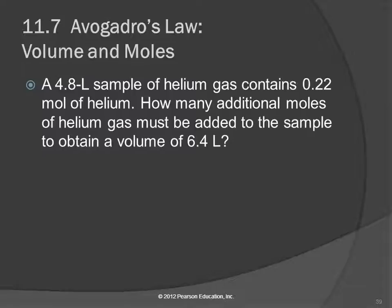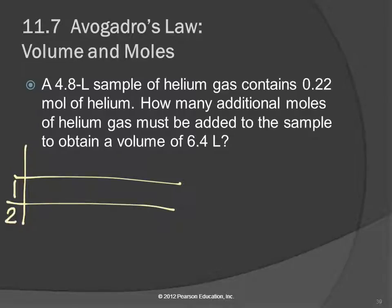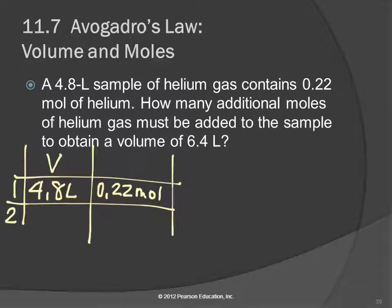Let's make a table and organize this information. The first number is 4.8 liters — that's a volume. And it contains 0.22 moles of helium, which has the letter lowercase n. And then the last number is 6.4 liters, so let's put that over here with the other volume.